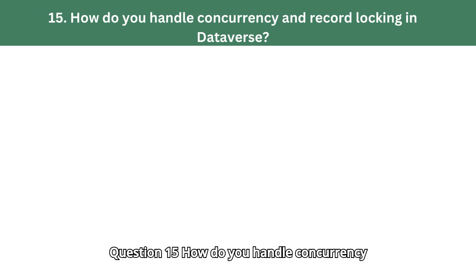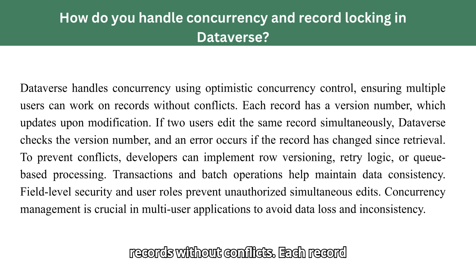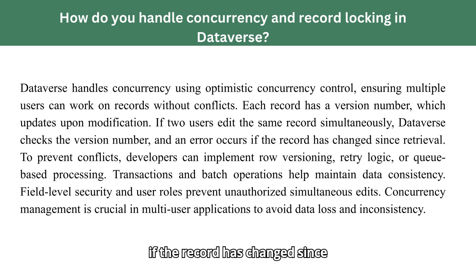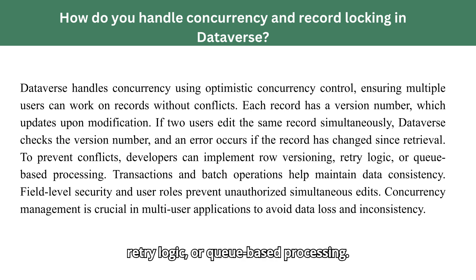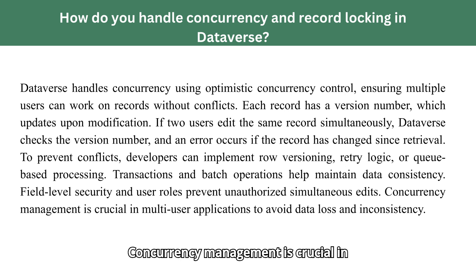Question 15: How do you handle concurrency and record locking in Dataverse? Dataverse handles concurrency using optimistic concurrency control, ensuring multiple users can work on records without conflicts. Each record has a version number which updates upon modification. If two users edit the same record simultaneously, Dataverse checks the version number and an error occurs if the record has changed since retrieval. To prevent conflicts, developers can implement row versioning, retry logic, or queue-based processing. Transactions and batch operations help maintain data consistency. Field-level security and user roles prevent unauthorized simultaneous edits. Concurrency management is crucial in multi-user applications to avoid data loss and inconsistency.